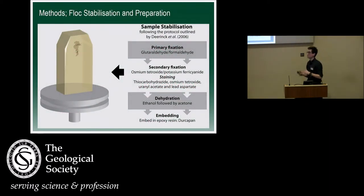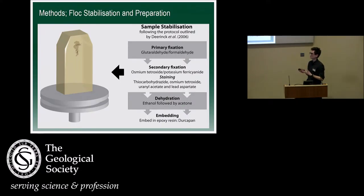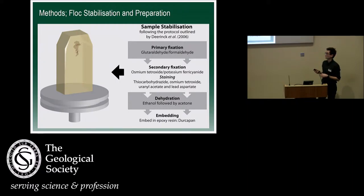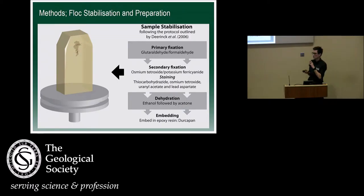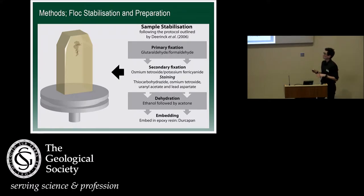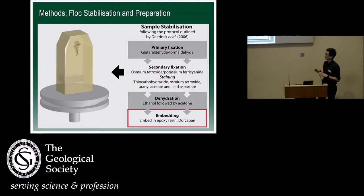I'm not going to go into much detail about methods because of time, but this is basically what you get at the end — a graphical image of what the sample looks like once it's been stabilised. A critical point was obviously making sure that we didn't destroy our organics. We developed a technique which allowed us to fix our organics and render them vacuum-stable: first fixing the samples, then staining them, and then finally embedding them in a resin.